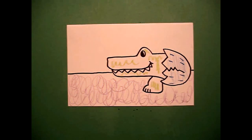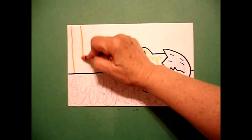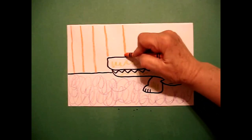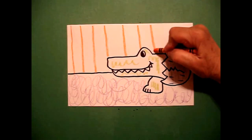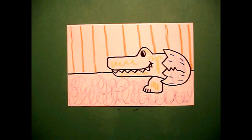Then to fill in the background, I'm just going to take an orange crayon and draw straight orange lines all the way from left to right for my alligator.